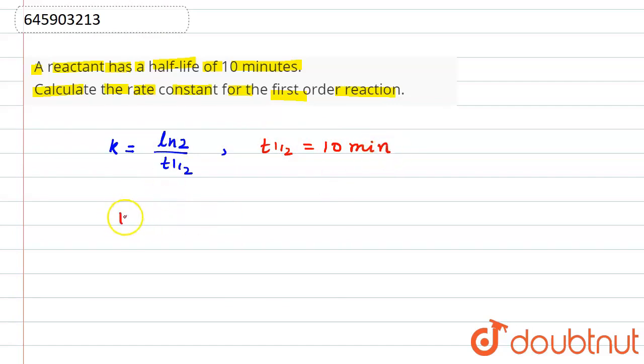Now put this value here. The value of k will be equal to the value of ln 2, which is 0.693, divided by 10, and the unit of this rate constant will be per minute.